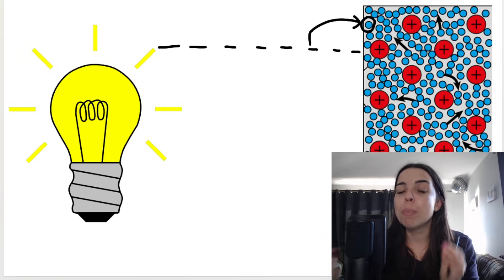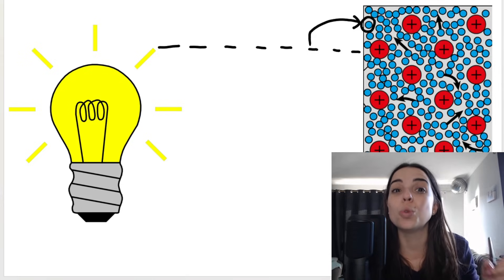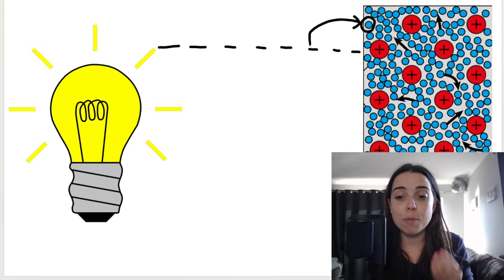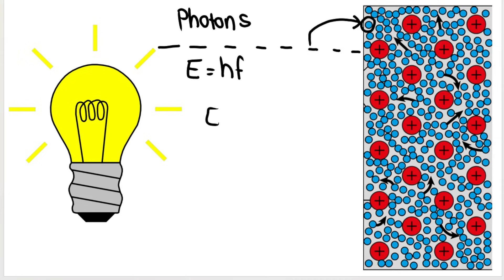It's all got to do with the metal and the properties of the metal and how that compares to the light. As a quick recap, light consists of photons or packets of energy. To calculate the energy of the photon, we can use either this formula or this formula — that was covered in the previous video, so go check that out if you missed it.